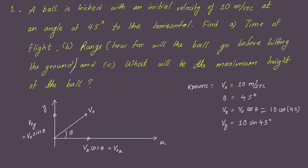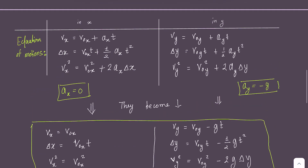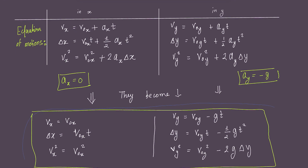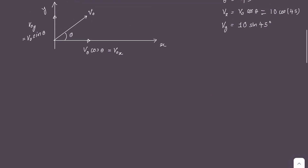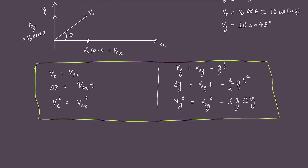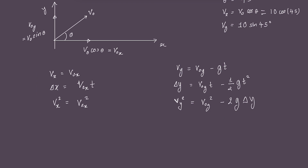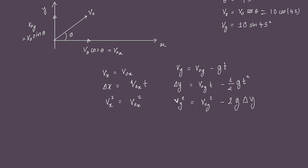I'm going to copy the equations from the last video. These are the kinematic equations in X and Y, where the subscripts denote which dimension. We have three major equations. Since acceleration in Y is −g and acceleration in X is zero, the equations simplify accordingly. Remember: if you know these equations, you can work out any projectile motion problem.